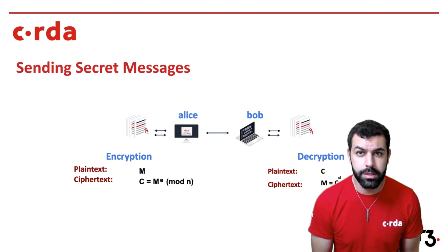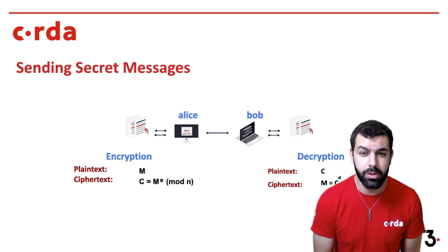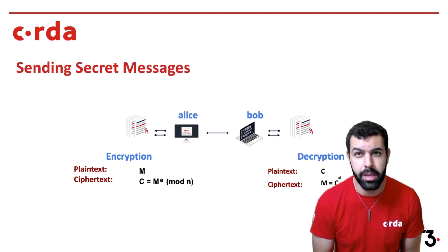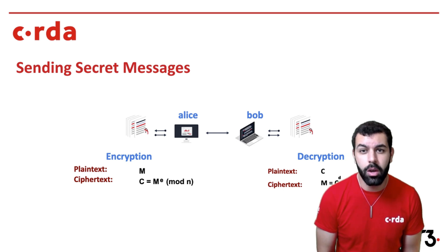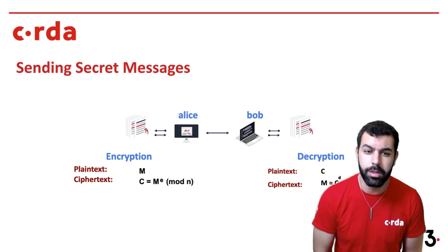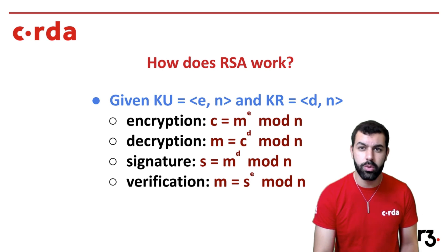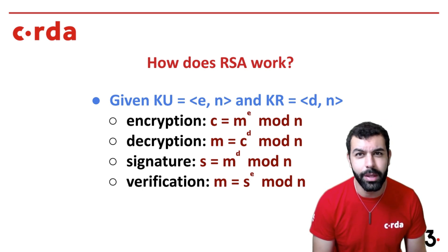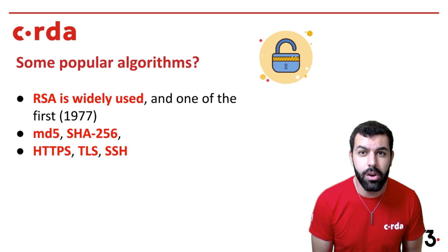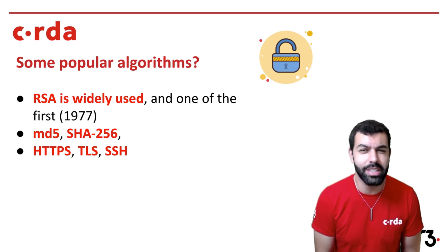Just to recap: anyone who wants to send secret messages can use these encryption and decryption formulas, and that's what your computer is actually doing when you send encrypted messages — using public and private keys from different parties to compose messages that can only be received by those parties. In terms of popular algorithms, RSA is very widely used, but there are other encryption schemes such as MD5, SHA-256, HTTPS, TLS, and SSH, which you have probably heard of at least once or twice.